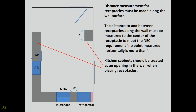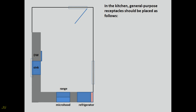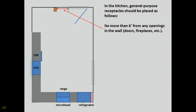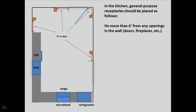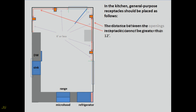Kitchen cabinets should be treated as an opening in the wall when placing receptacles. In the kitchen, general purpose receptacles should be placed so that no point is more than 6 feet from any opening in the wall — doors, fireplaces, etc. — and the distance between receptacles cannot be greater than 12 feet.